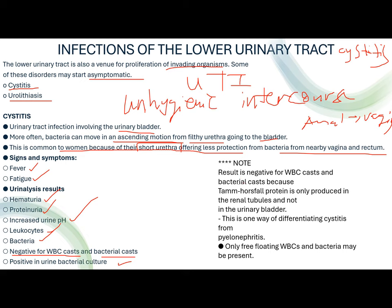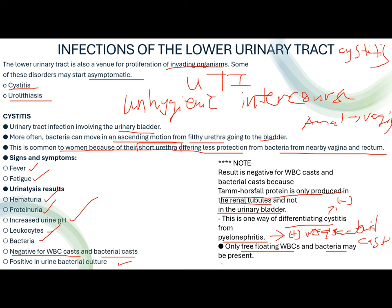Cystitis is negative for WBC casts and bacterial casts because Tamm-Horsfall protein is only produced in the renal tubules, not in the urinary bladder. This is one way to differentiate cystitis from pyelonephritis — in pyelonephritis you are positive for WBC and bacteria casts, while in cystitis only free-floating WBC and bacteria may be present.